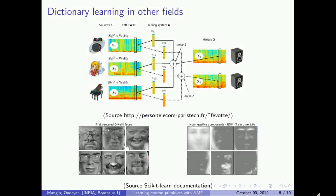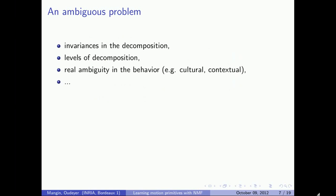This problem is an instance of a more general class called dictionary learning problems, which have been studied in other fields — for example, to learn to separate different instruments in a piece of music, or to learn from images of faces some relevant parts like nose, eyebrows, and mouth. Unfortunately, this problem is ambiguous: the same gesture can be decomposed at different levels of detail, or the gesture itself is ambiguous — similar to how two people from different mother tongues can interpret a sound differently.